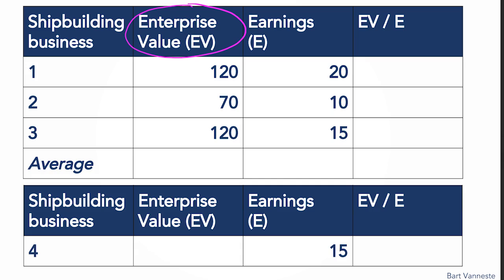The second column is enterprise value — basically, how much the company is worth, or how much you would have to pay to buy it. For business one, that would be 120. The third column is earnings, which is what the earnings were in the last year — for company one, it was 20. Given that we have enterprise value and earnings, we can calculate what is called a multiple: enterprise value over earnings. So it's a ratio — we divide 120 by 20, which is six. This multiple means that if you want to buy business one, you have to pay six times last year's earnings.